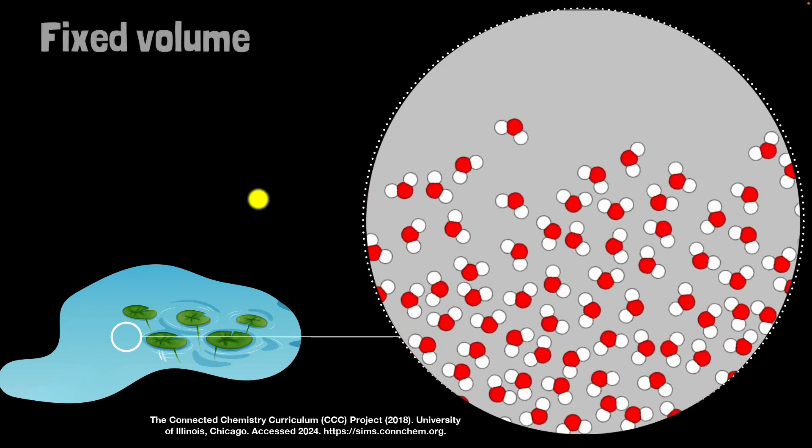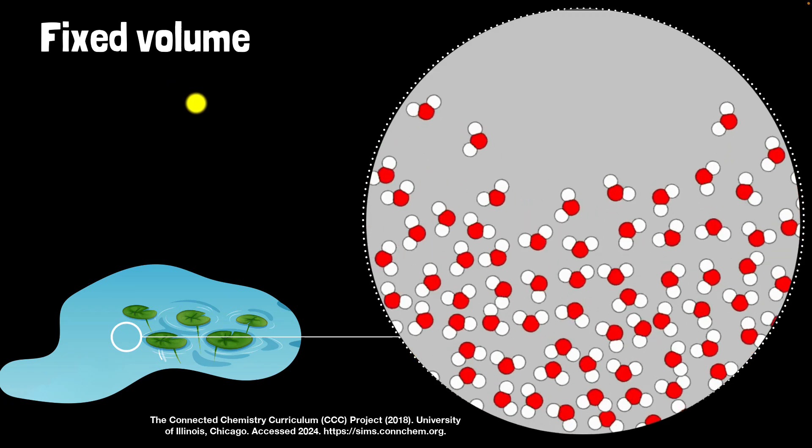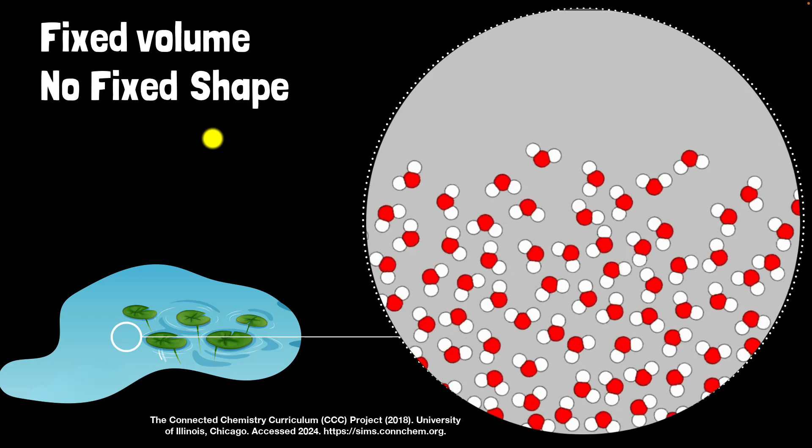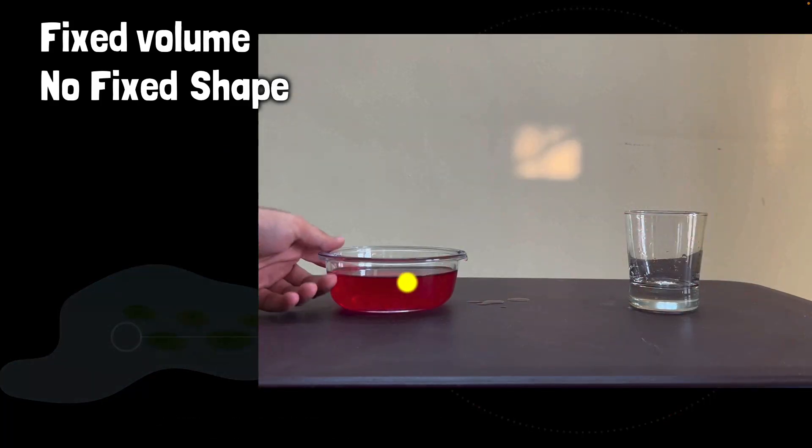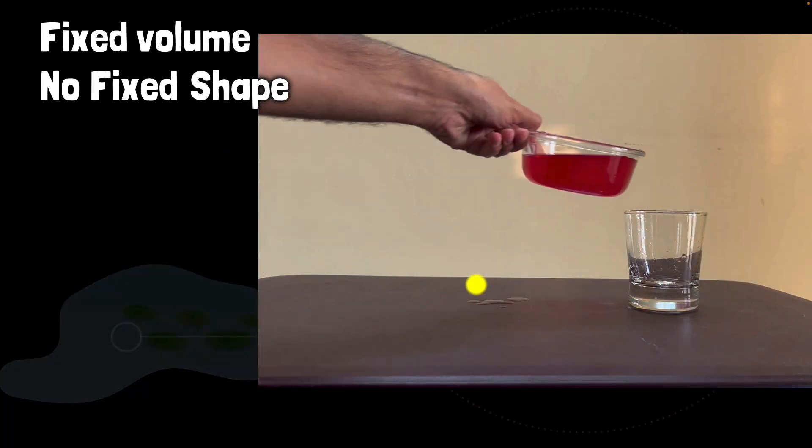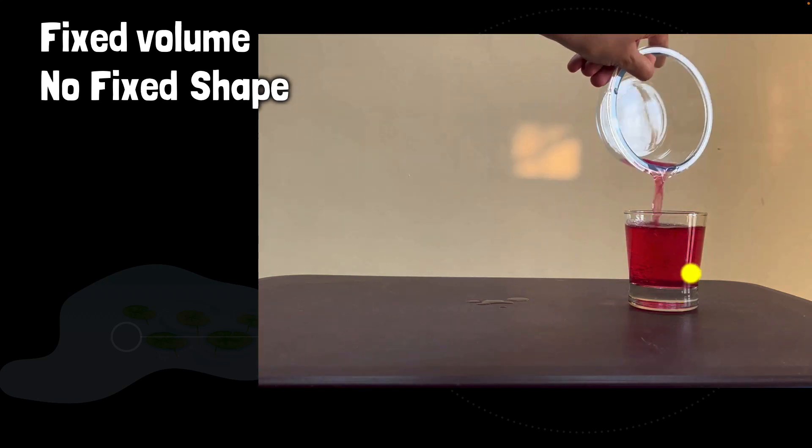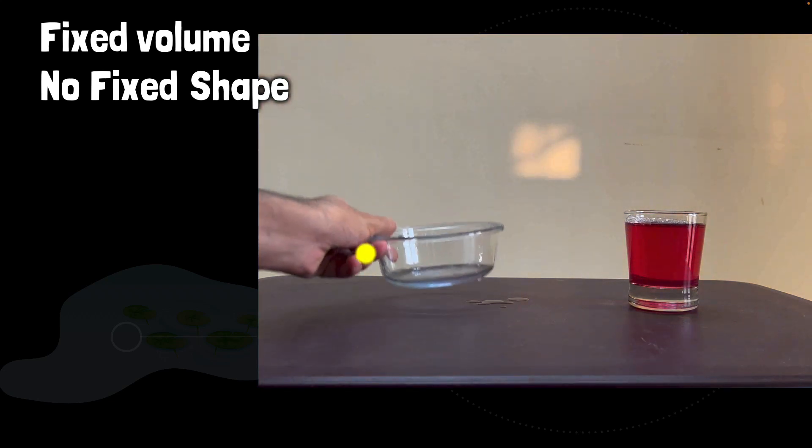Therefore, liquids do have a fixed volume, but they do not have a fixed shape because they can easily flow. This is why they take the shape of the container. For example, over here, look, the liquid is taking the shape of this container, but now if I pour it over here, the volume stays the same, but now it takes the shape of this container. It does not have a fixed shape because it can flow.